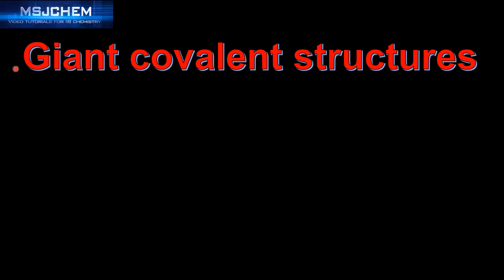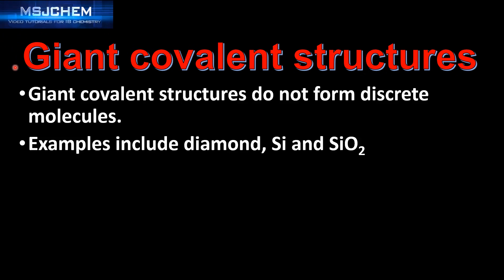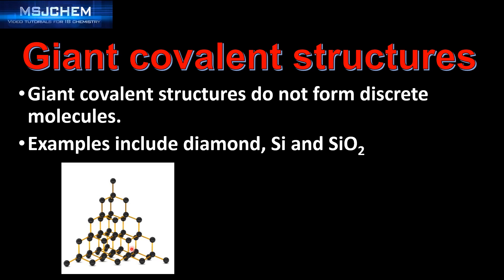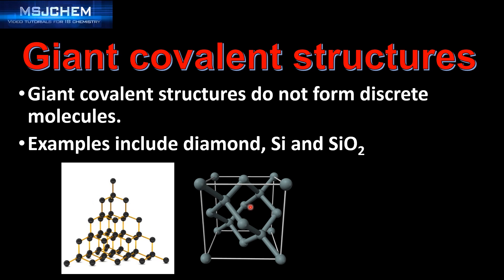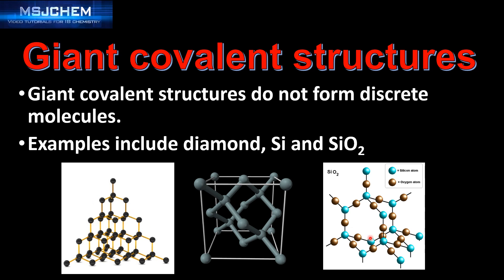Now we'll move on to the next type of covalent structure: the giant covalent structure. Giant covalent structures do not form discrete molecules. Examples include diamond, silicon, and silicon dioxide. Here we can see the structure of diamond, this is silicon, and this is silicon dioxide. They do not form discrete molecules; rather, they form giant covalent structures.